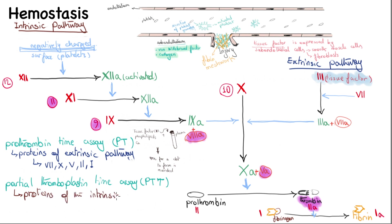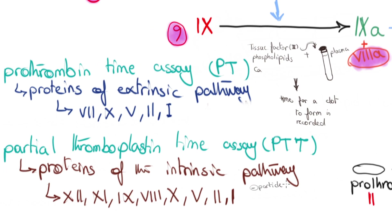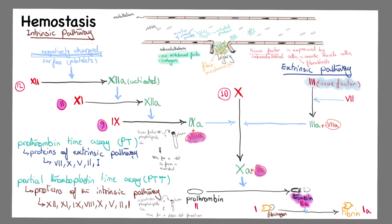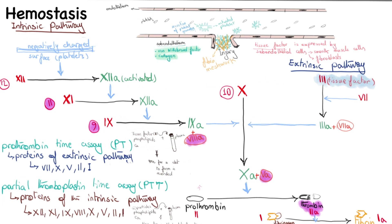In partial thromboplastin time (PTT), we assess the intrinsic pathway proteins: factors 12, 11, 9, 8, 10, 5, 2 (prothrombin), and 1 (fibrinogen). Negatively charged particles that activate factor 12, plus phospholipids and calcium, are added to the patient's plasma, and the time to fibrin clot formation is recorded.